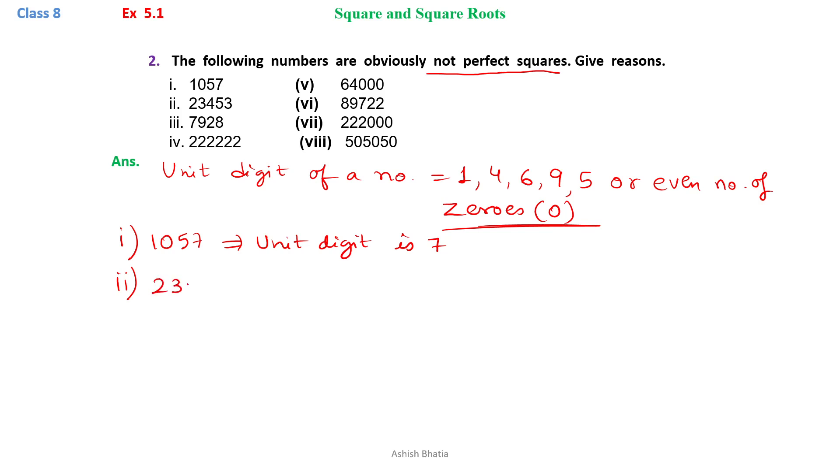The second one is 23453. We have to identify what the unit digit is. As the unit digit is 3, it can't be a perfect square.